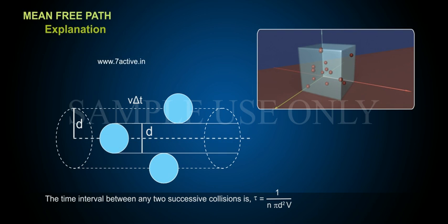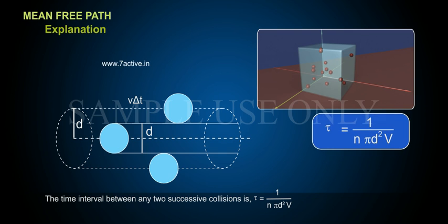The time interval between any two successive collisions is tau equals 1 by n pi d square v.